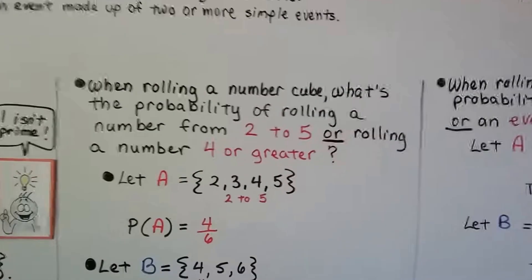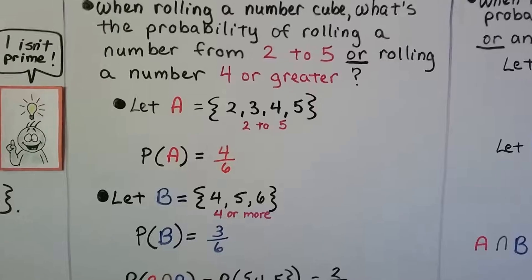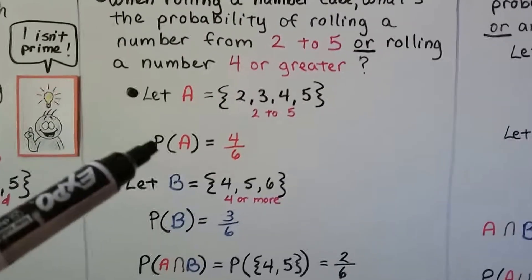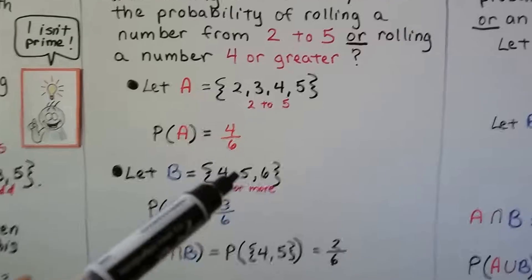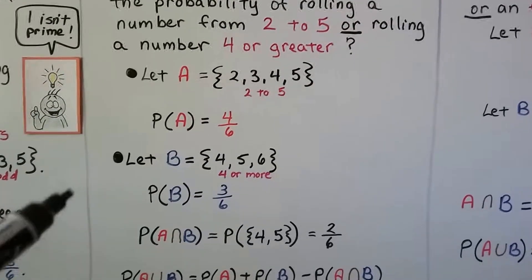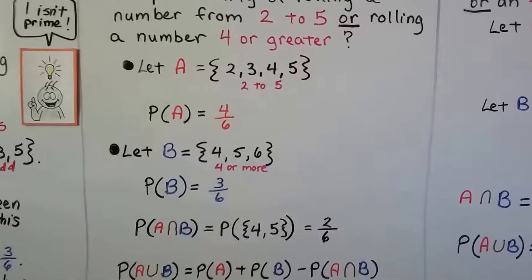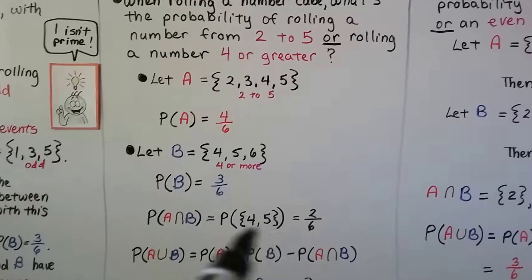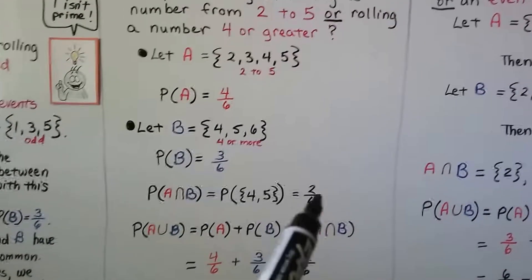Let's try another one. When rolling a number cube, what's the probability of rolling a number from 2 to 5, or rolling a number 4 or greater? We let A equal {2, 3, 4, 5} — numbers from 2 to 5 — so the probability of A is 4/6. B equals {4, 5, 6} — numbers 4 or greater — so the probability of B is 3/6. The probability of A intersect B is {4, 5} — 2 numbers out of 6, so it's 2/6.